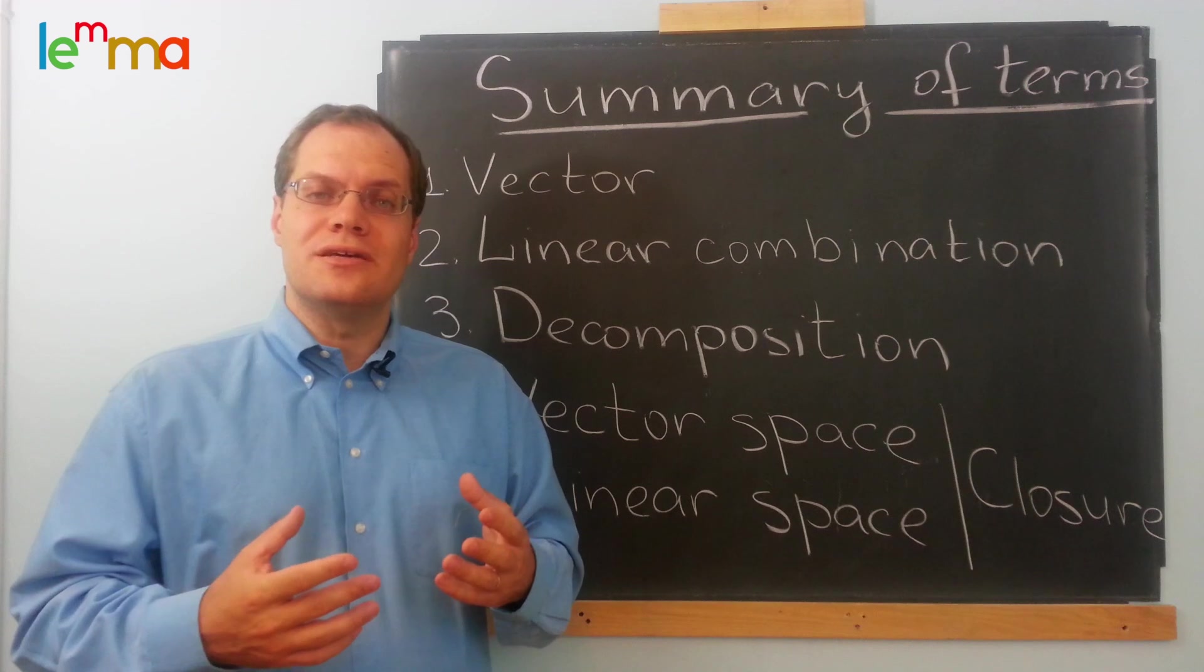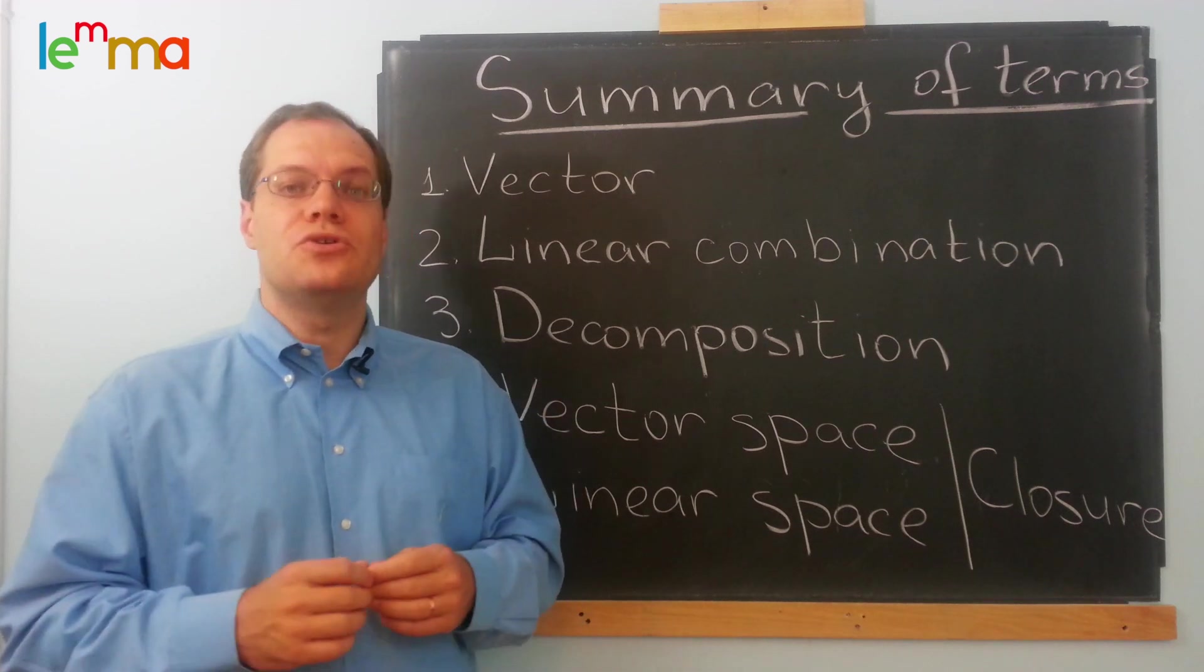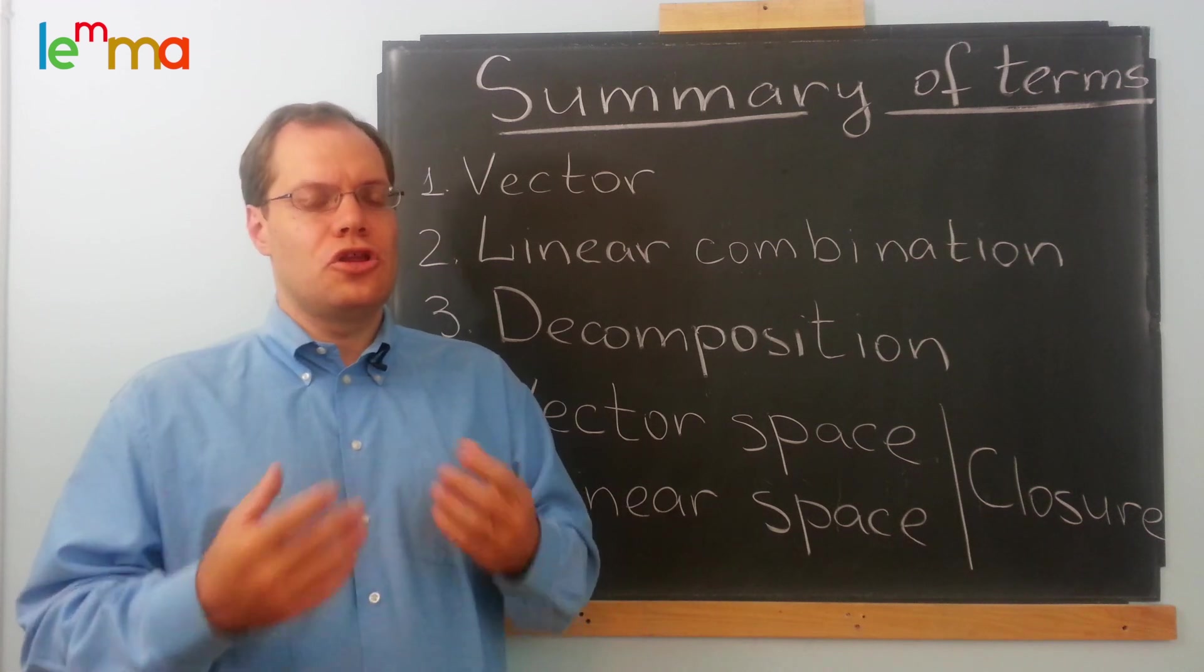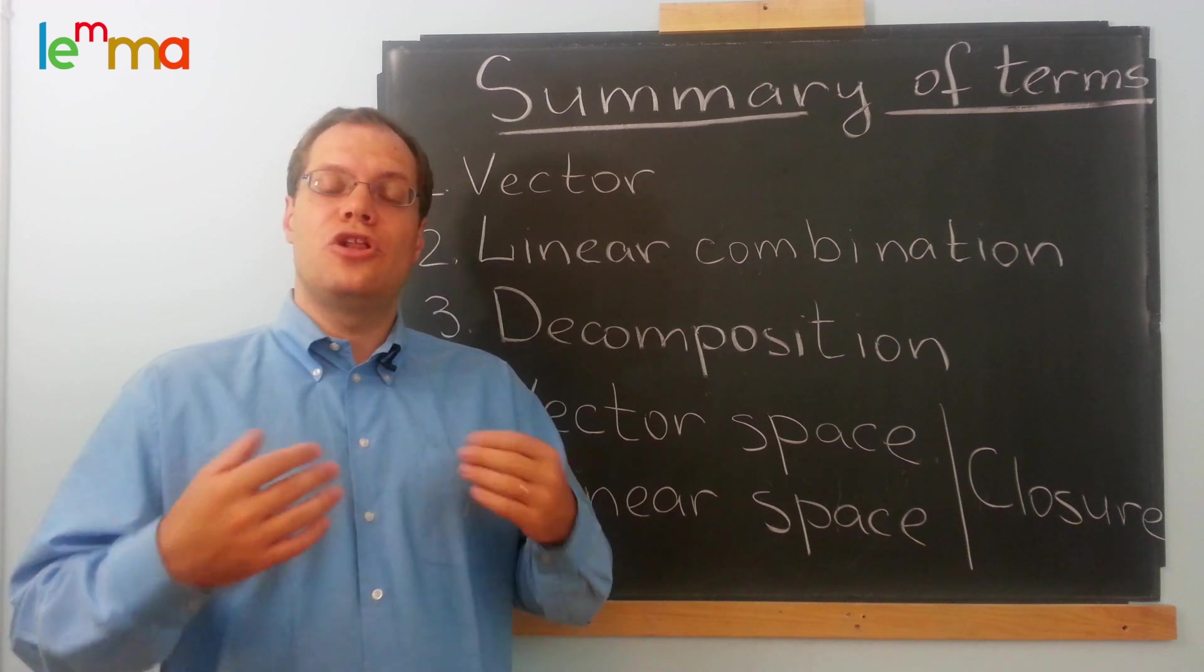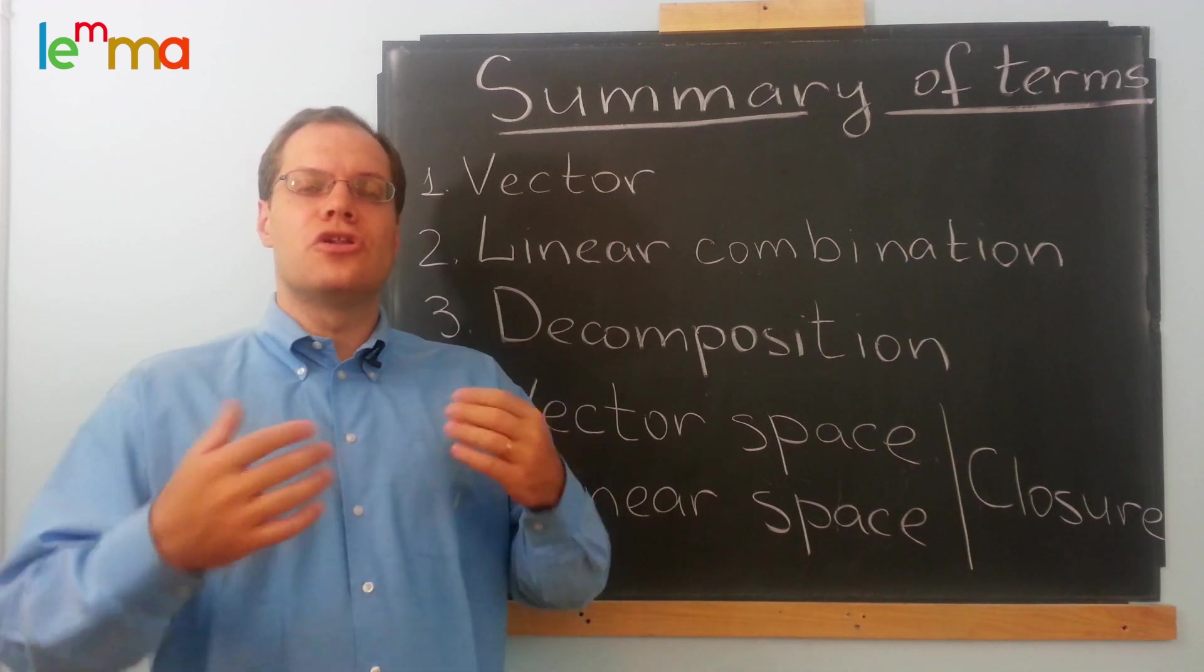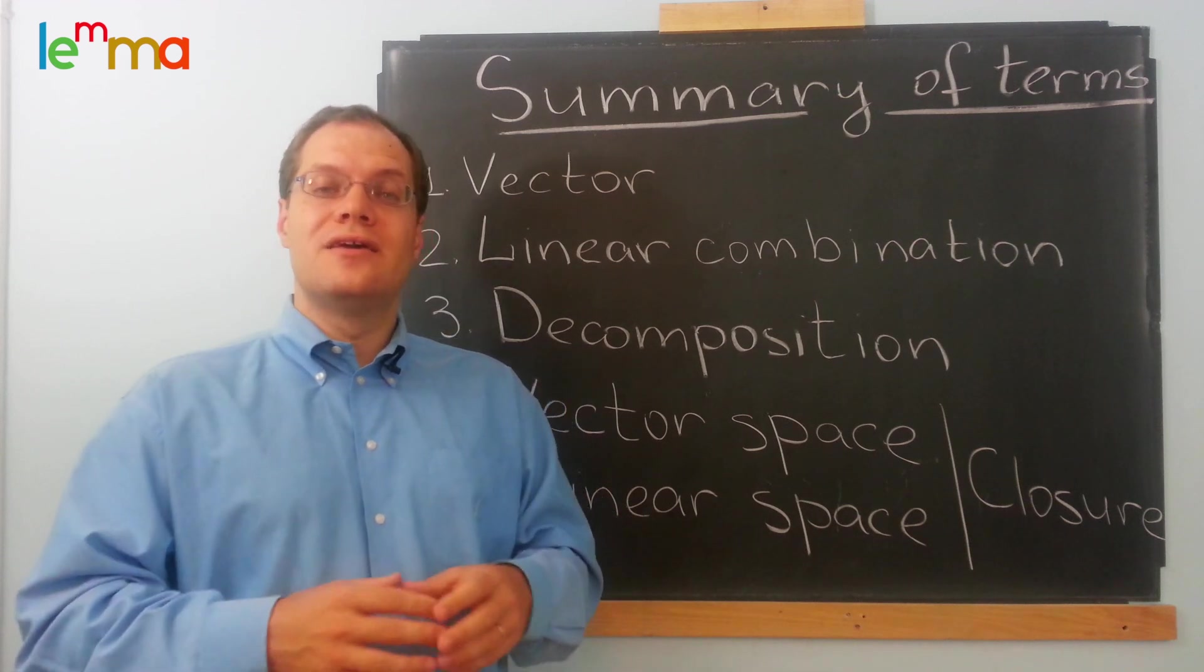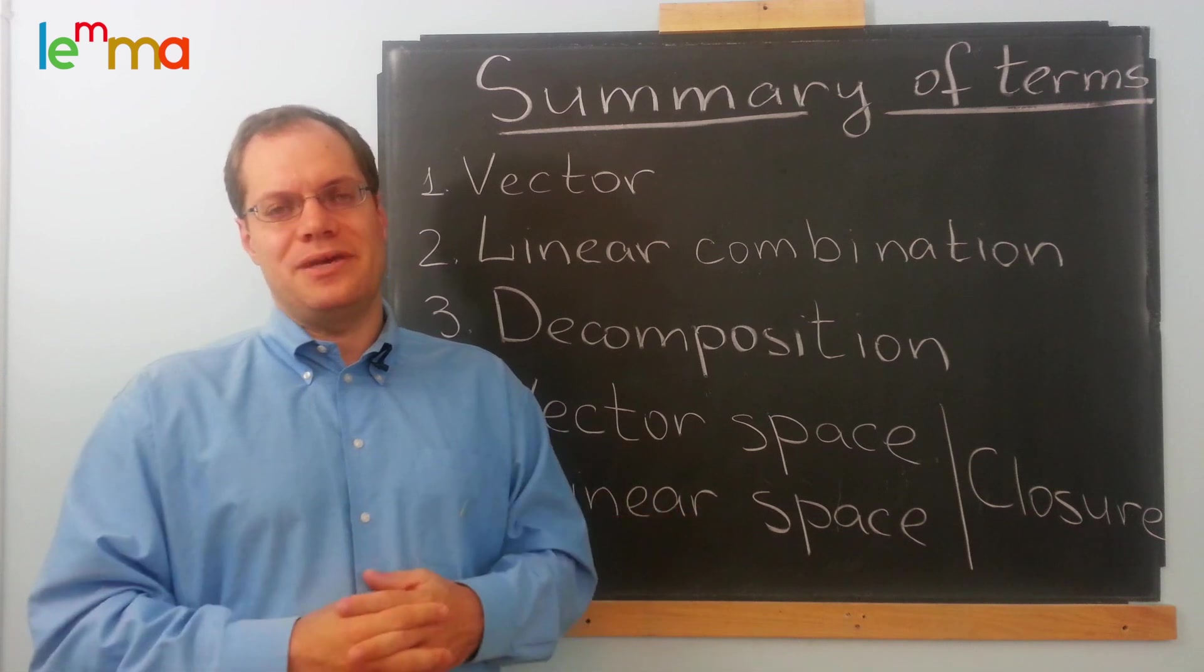Or, more generally, we're talking about closure under linear combinations. So you can say, for instance, that polynomials are closed under linear combinations. We observe closure under linear combinations. And to say that a set of certain objects is closed under linear combinations is equivalent to say that those objects form a vector space or a linear space.